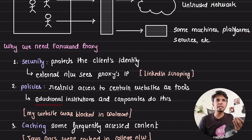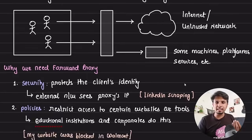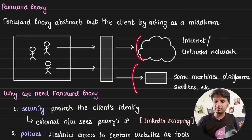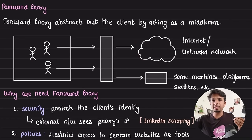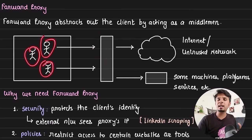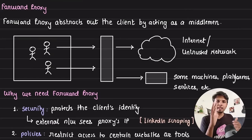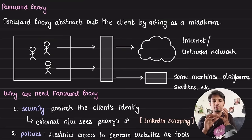One of the most important reasons for a forward proxy is security — it protects the client's identity. External systems, like the internet or other services, only see the IP address of the proxy and don't know the IP address of the client. External sites typically see only the IP address of the proxy machine.